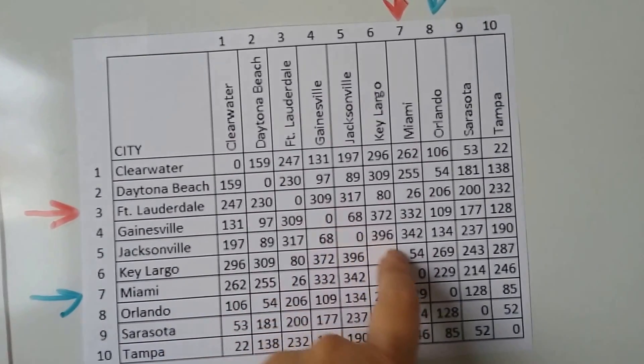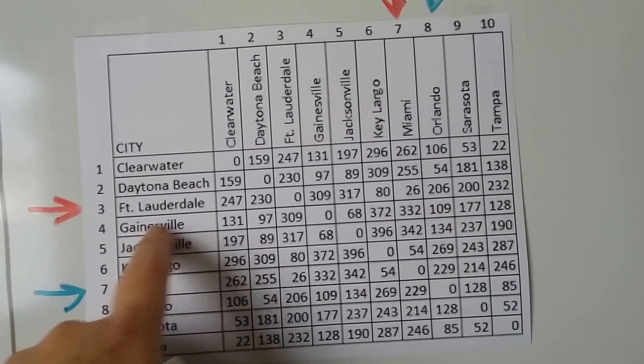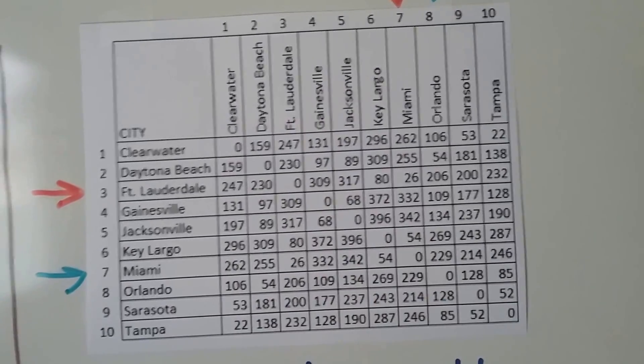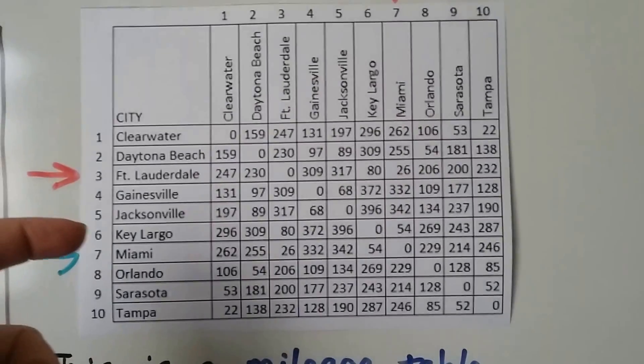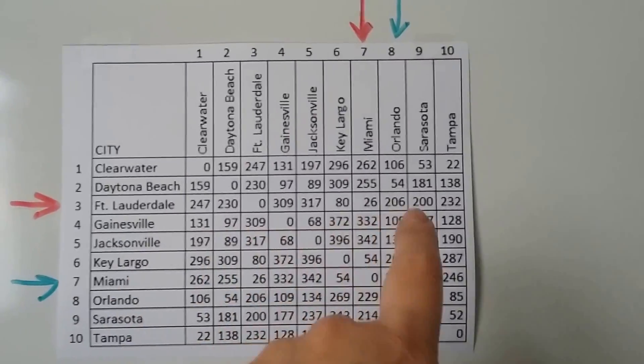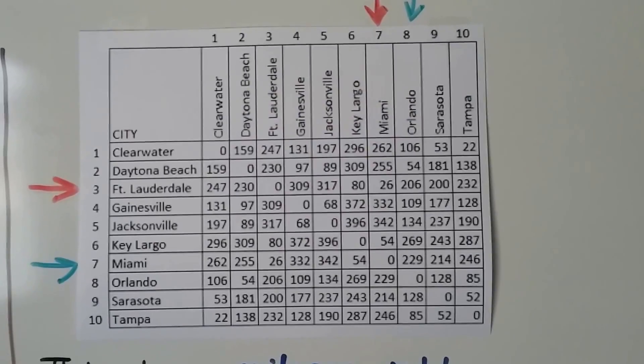That's why the zeros are coming down at an angle. It's where that city meets itself. So we have zero as a placeholder. But we could intersect any city to another city to find the distance in miles from this table. Isn't that great?